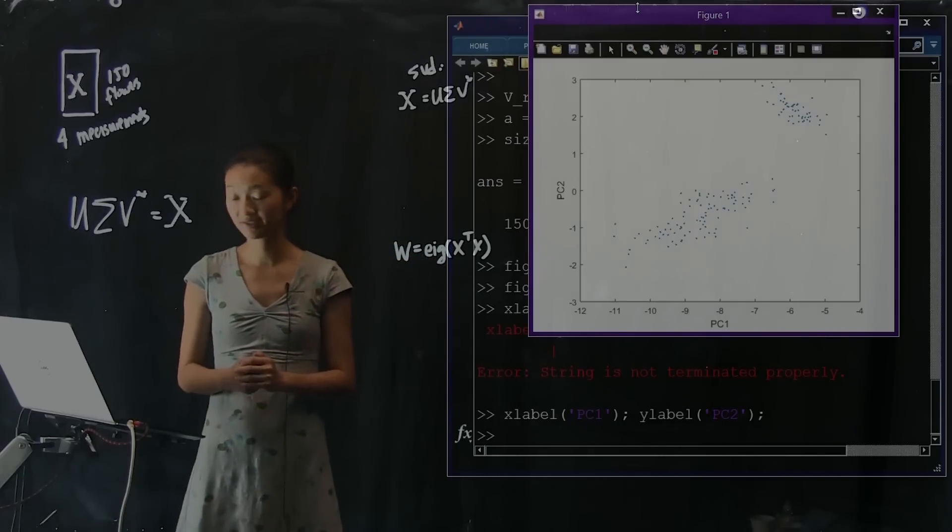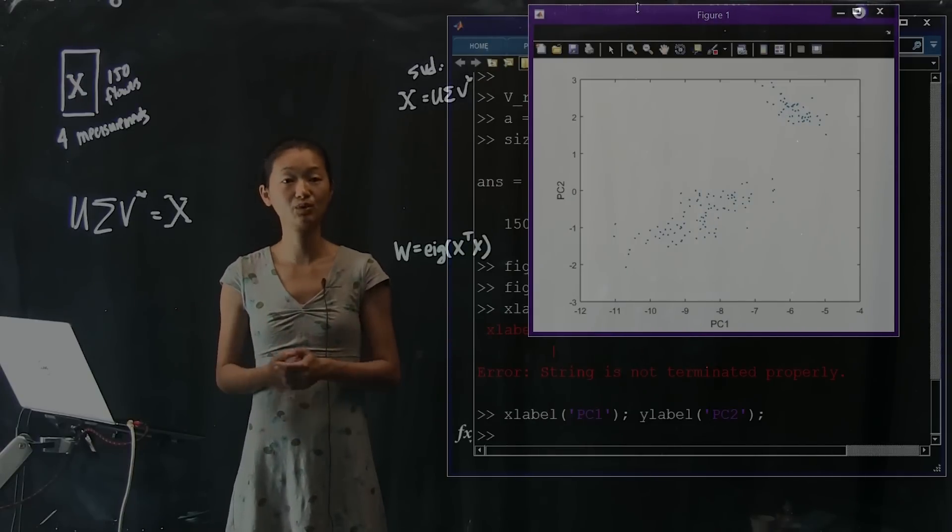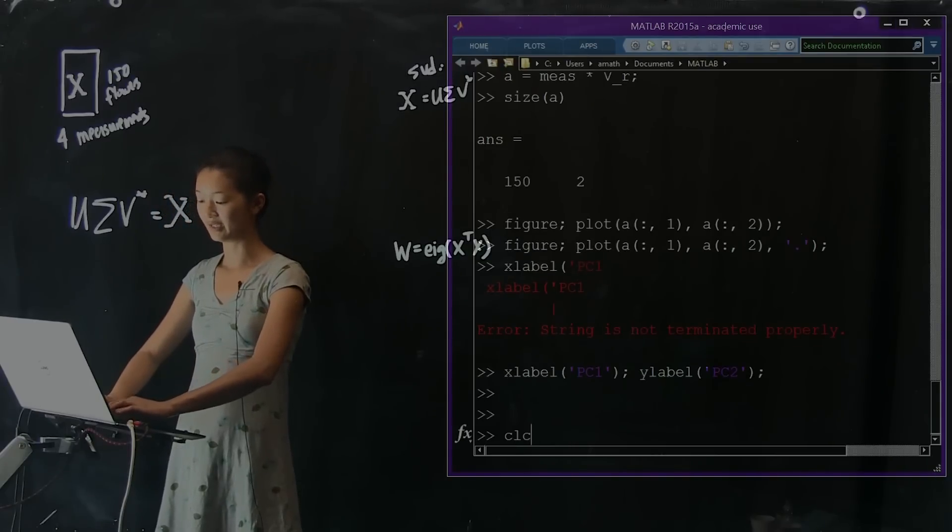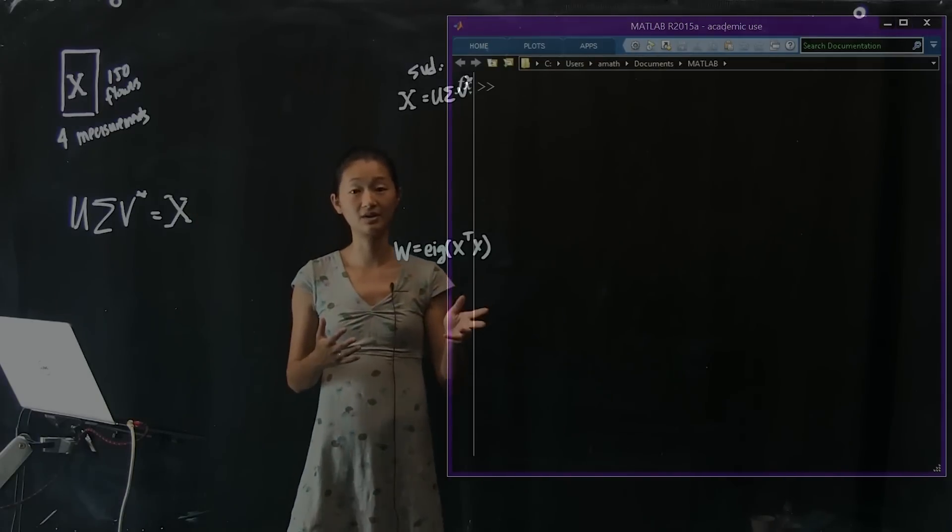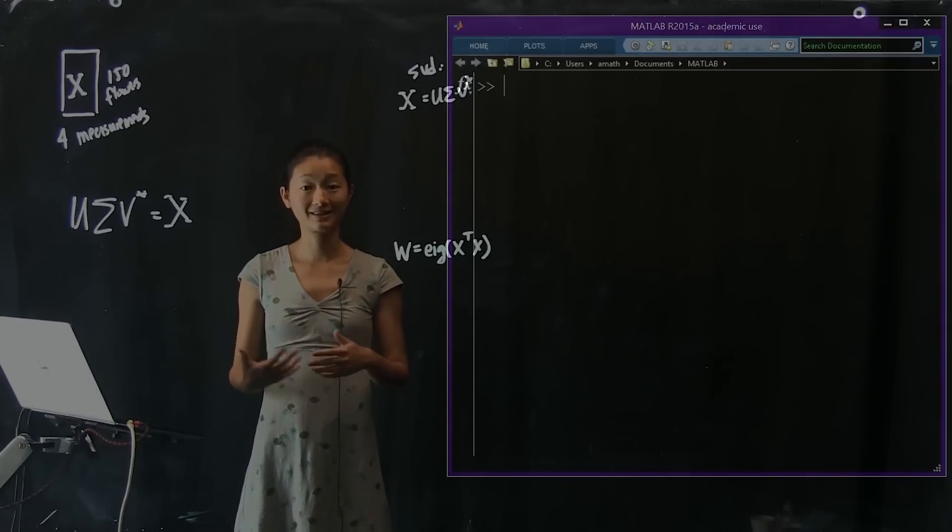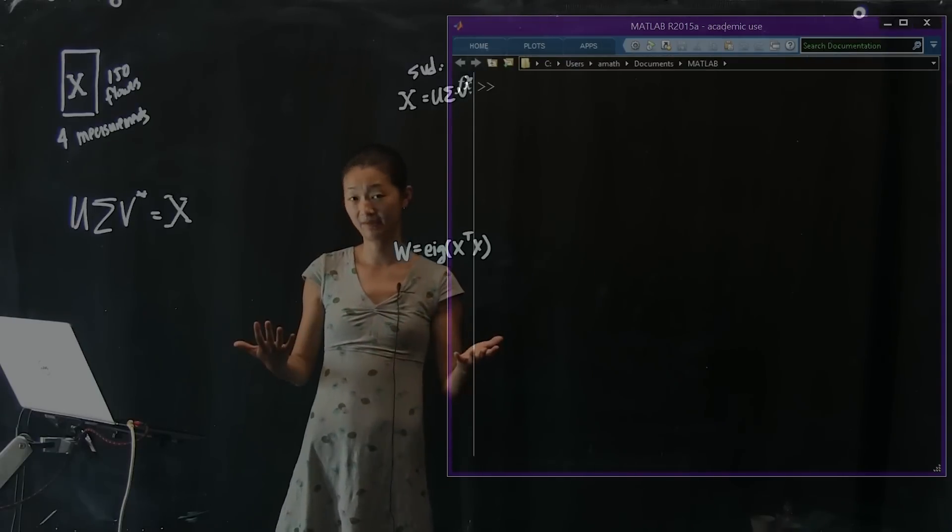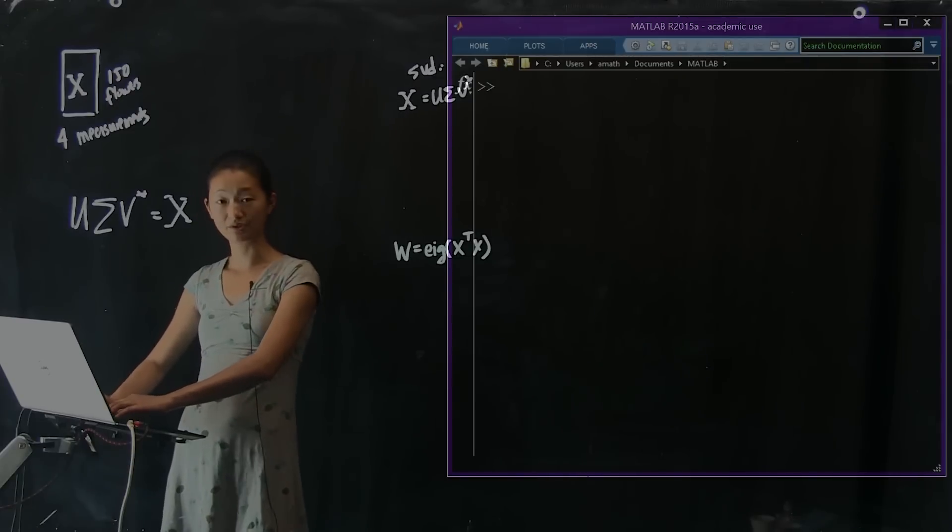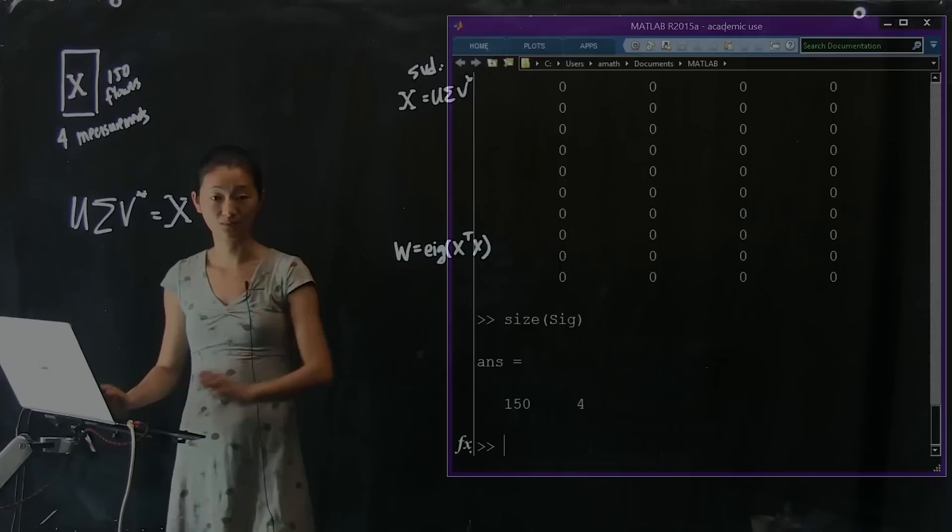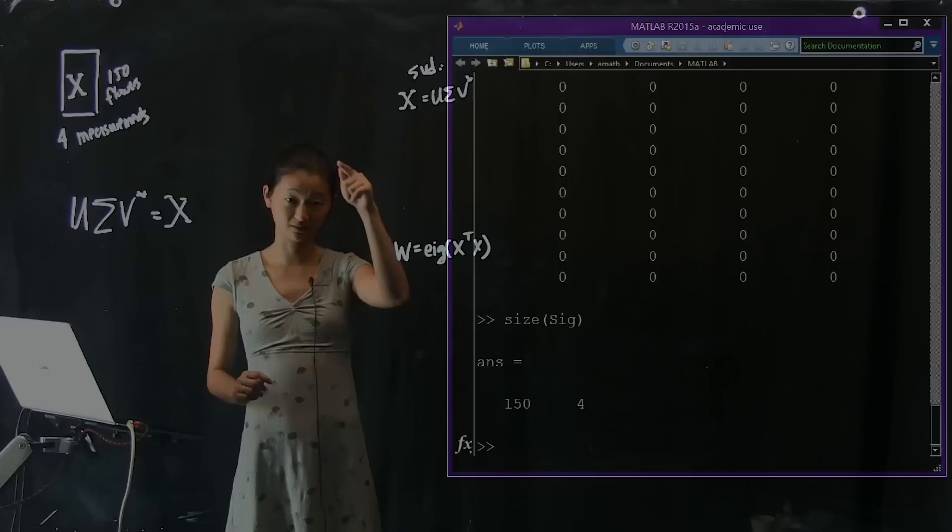So next I'm going to ask the question, well, were these two principal components, was that the right thing to do? Like should I have picked three? Would that have been better? Was one sufficient? This is the kind of question I would like to ask. And so following the discussion we had earlier, what we can do is look at the value of the singular values. These sigmas that come out. And by looking at the relative value, we can assess how many of these singular values we really need to keep in order to explain a reasonable amount of the data. And so what we're going to do is remember that our sigma matrix was very large and it's full of zeros. So if you look at the size of sig, it's 150 by 4.